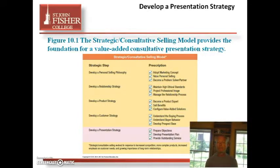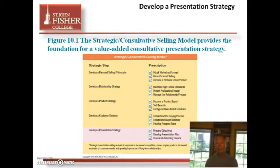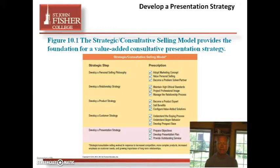Here's a model we've kind of gone through in this book: first, we developed a personal selling philosophy in the first few chapters, then a relationship strategy including ethics, then a product strategy — being an SME or subject matter expert — and being the customer expert and competition expert. Then we talked about developing a customer strategy, and now we're going to talk about developing a presentation strategy, which will take us through the rest of the book.